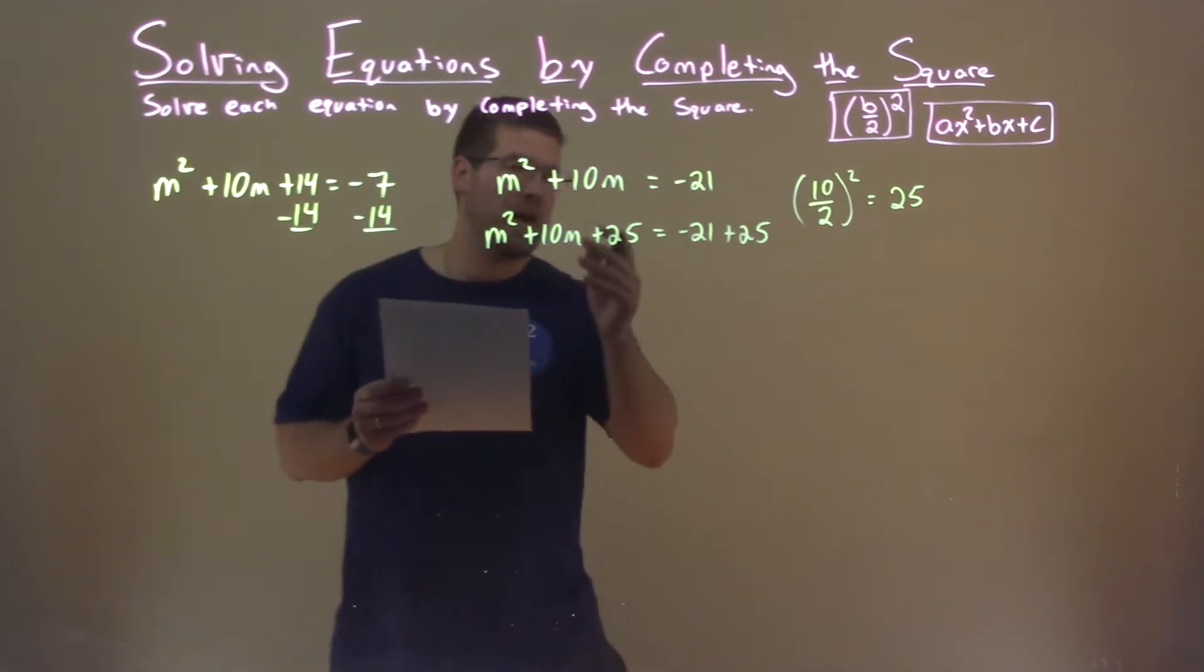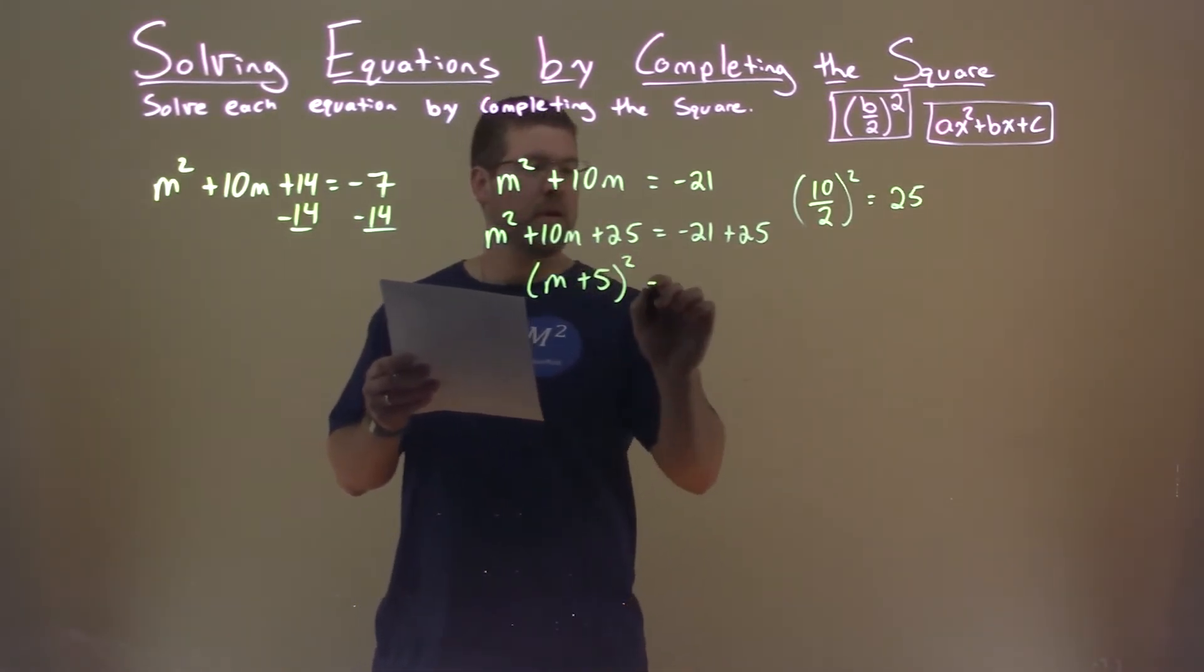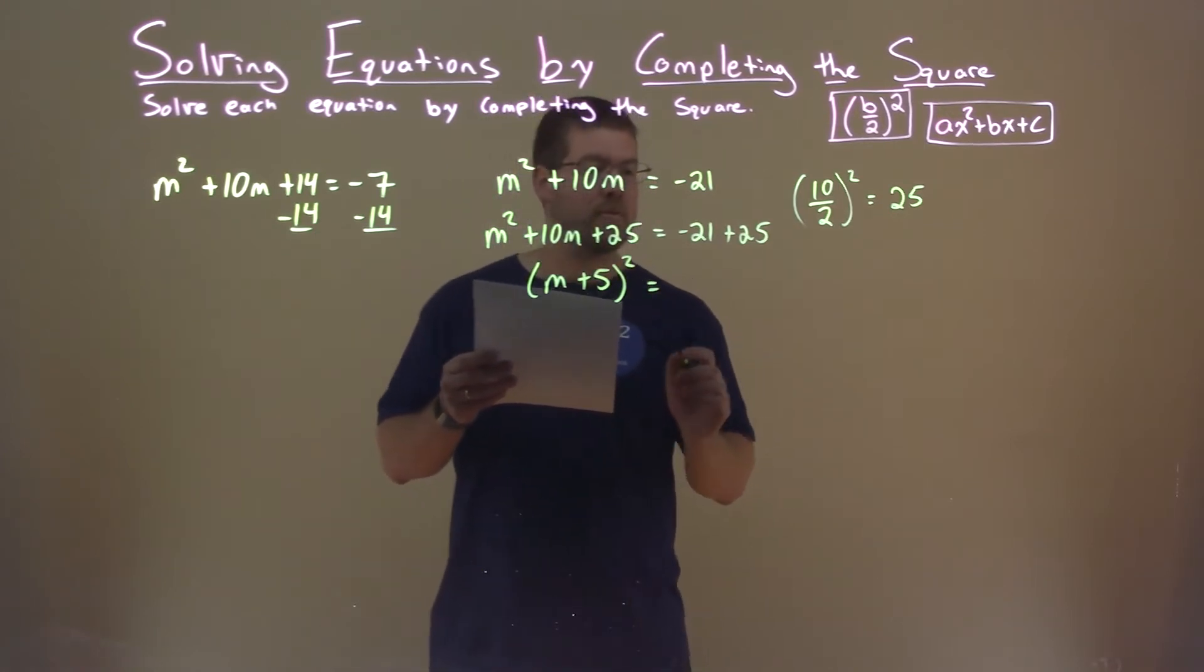My left-hand side now is a perfect square: m plus 5, all squared, is equal to negative 21 plus 25, which is a positive 4.